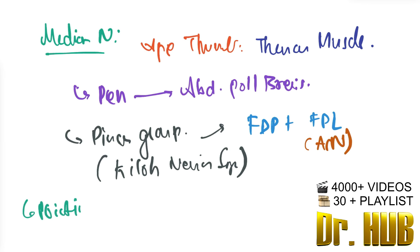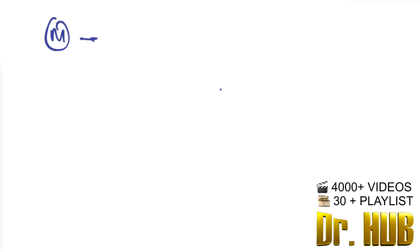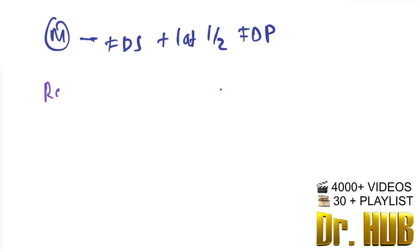Lastly, we look at the pointing index, which is Ochsner's clasp or the benediction sign. The muscles involved in Ochsner's clasp or the benediction test include the flexor digitorum superficialis plus the lateral half of the flexor digitorum profundus.